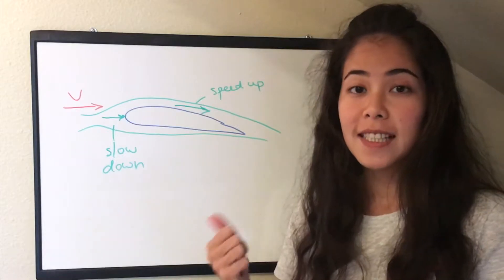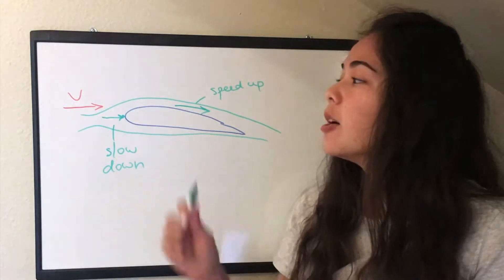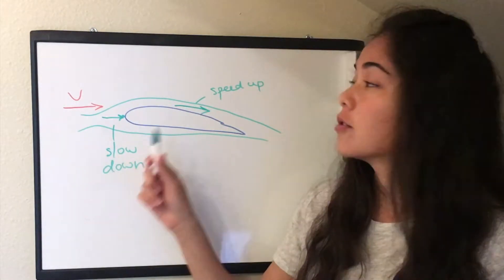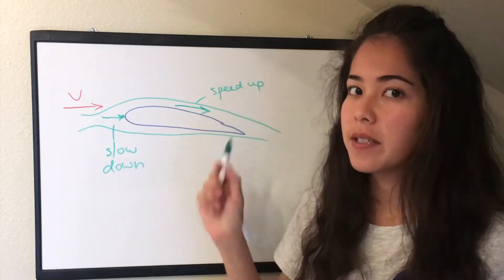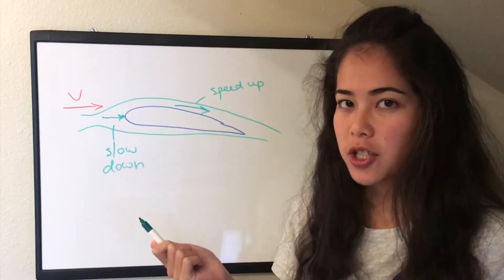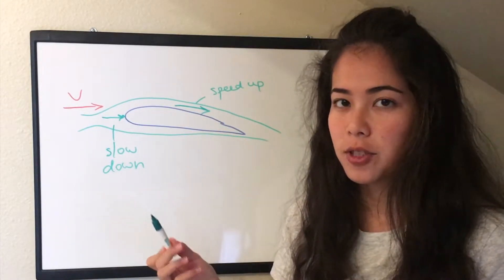We will see in one of the next videos why this happens. But when the air slows down or speeds up at high speeds its properties will change. And actually the density will change.